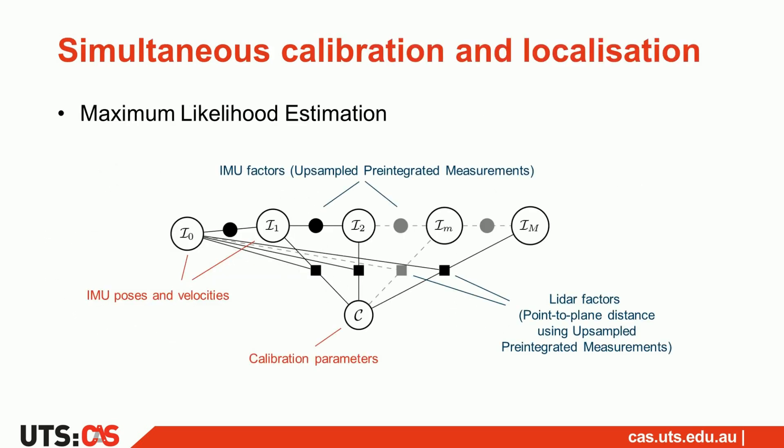To estimate the relative transformation between the sensors, we formulated the problem as maximum likelihood estimation. We estimate both the IMU trajectory and the calibration parameters based on point-to-plane distances and IMU pre-integration.